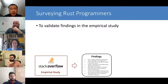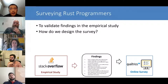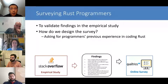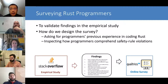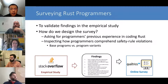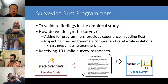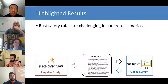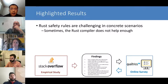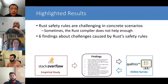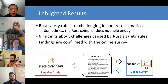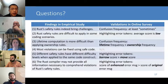We got six findings from the empirical study. To validate these findings, we conduct an online survey on Qualtrics. Besides directly asking participants about their previous experience coding Rust, we show them small programs containing safety rule violations and design questions to observe how participants comprehend the violations. In total, we received 101 valid responses from real-world Rust programmers. We conducted extensive data analysis on the responses to check consistency with the empirical study findings.